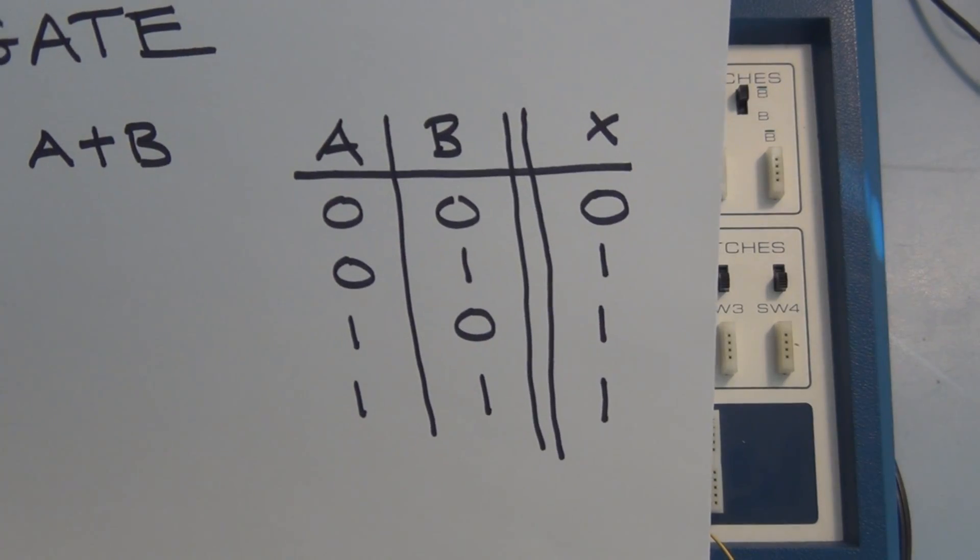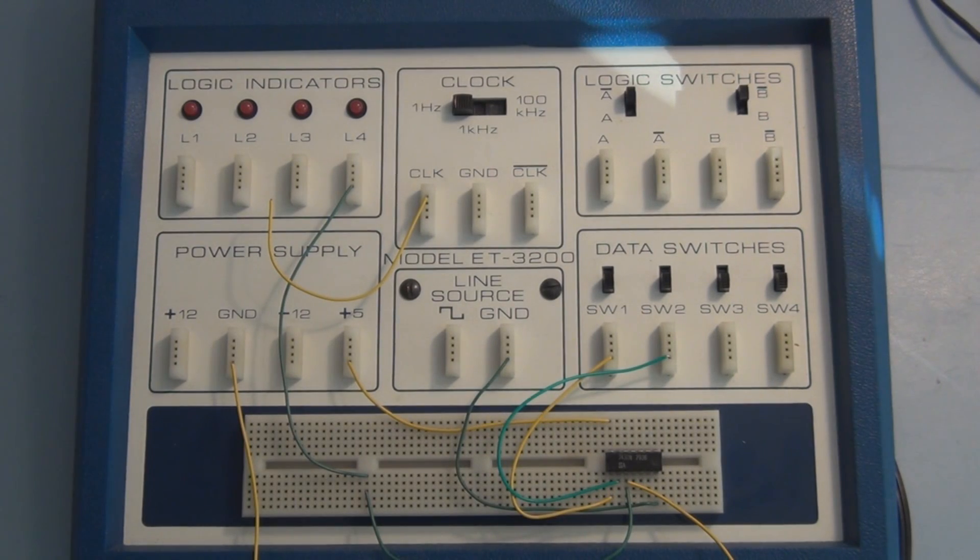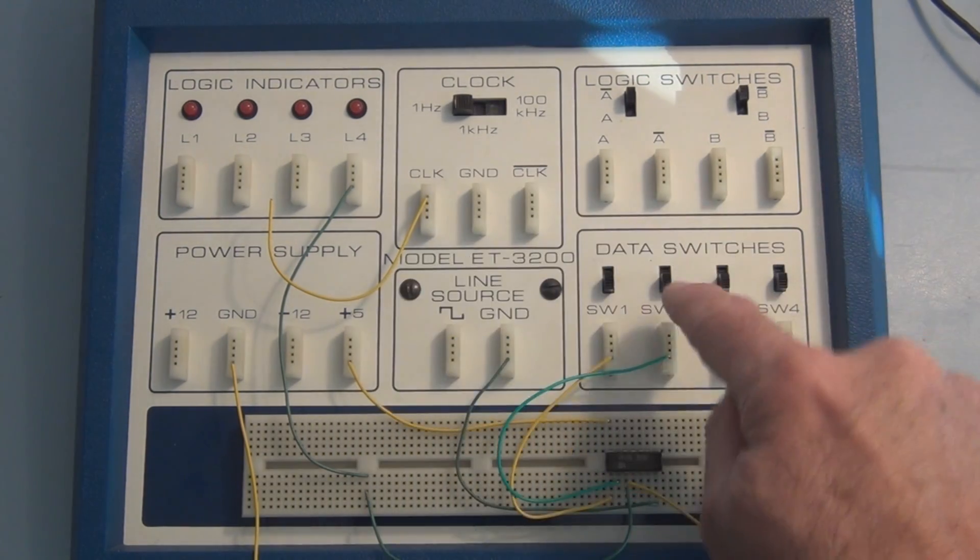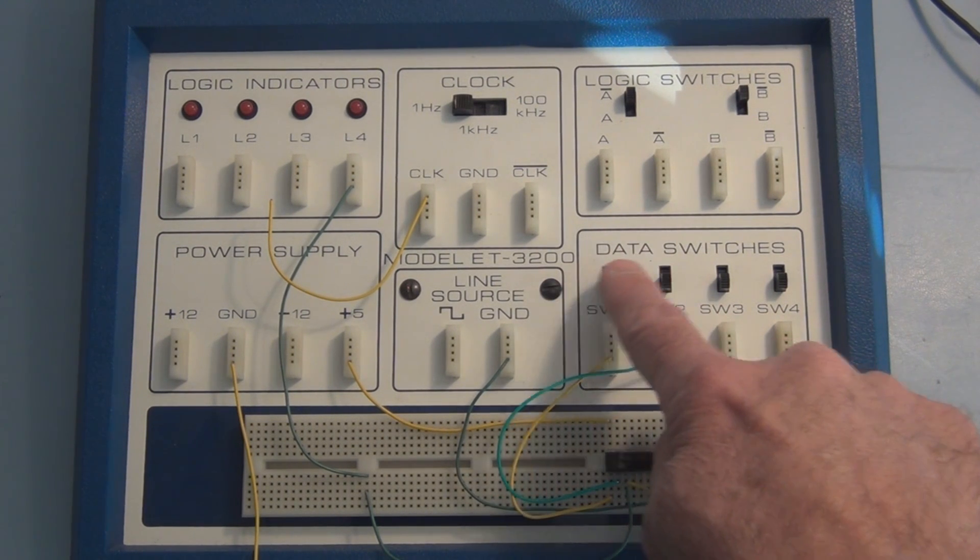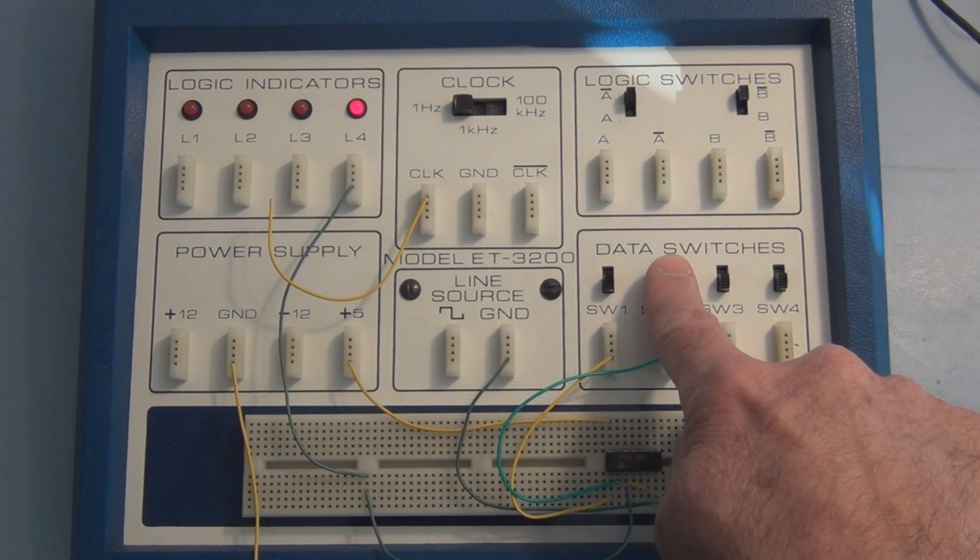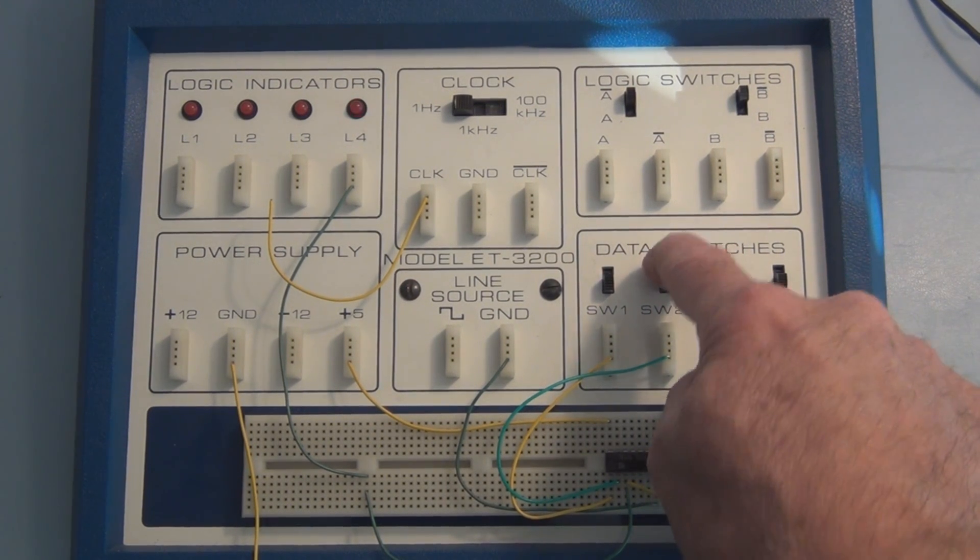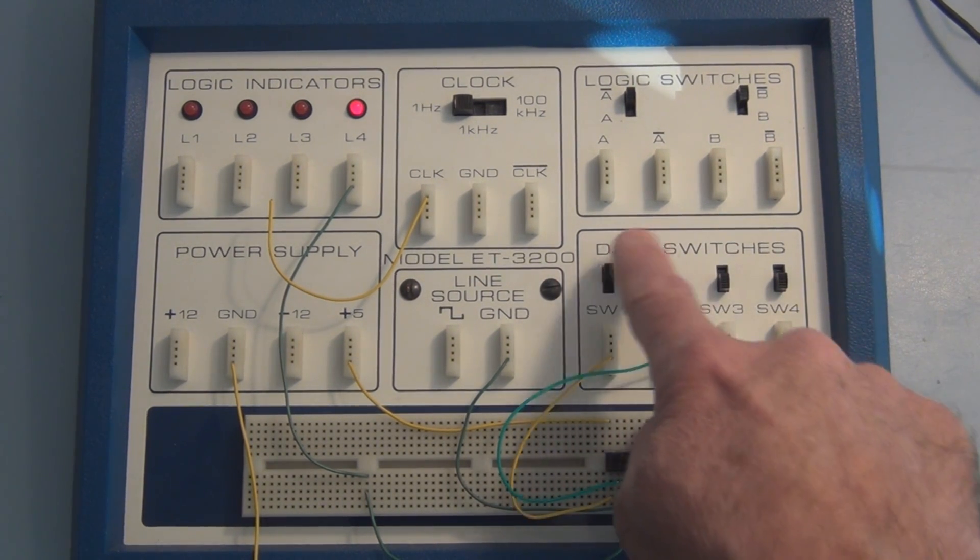So let's verify the truth table for the OR gate. Here we see that a zero and a zero has a zero output. And now we'll have a zero and a one, and we have an output of one. The LED is on. And here we have a one and a zero. The LED is on.